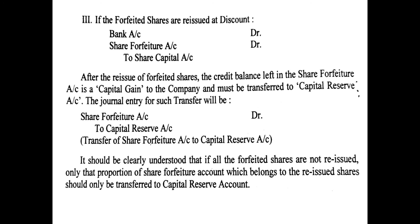If all forfeited shares are not reissued, only the proportion of Share Forfeiture Account belonging to the reissued shares should be transferred to Capital Reserve Account. For example, if 100 shares were forfeited but only 80 reissued, only the amount relating to those 80 shares is transferred to Capital Reserve. The rest is transferred only when the remaining shares are actually reissued.